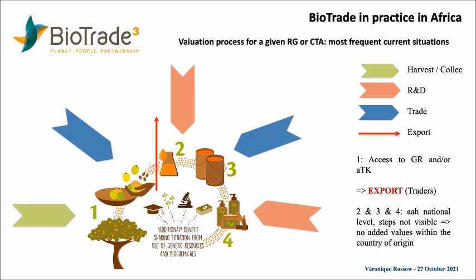I would like to go back to the red arrow that you see between step number one and step number two. Most of the time in developing and providing countries, you have the export step which occurs between stage one and stage two. Today, using tools like the Biotrade initiatives or the ABS of the Nagoya Protocol, we are using those tools to recapture some value within the country of origin where the resource is occurring.